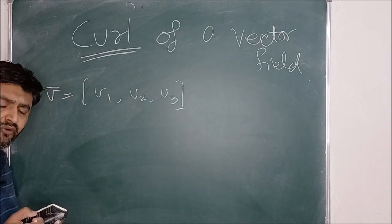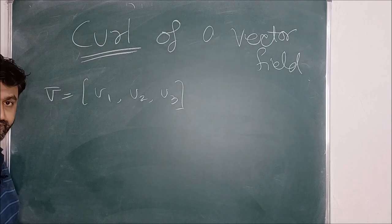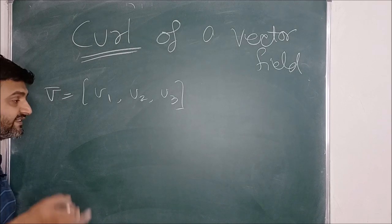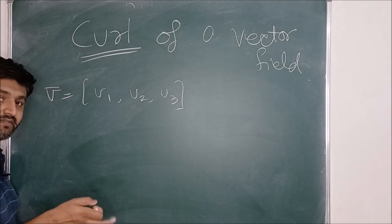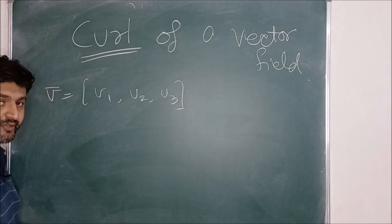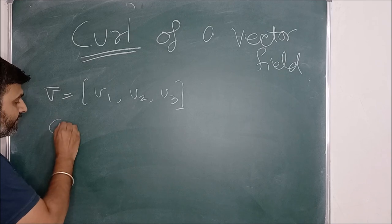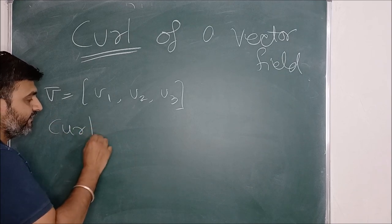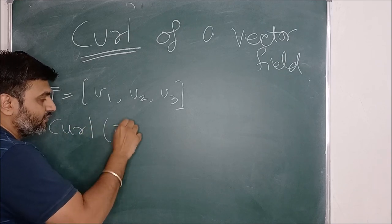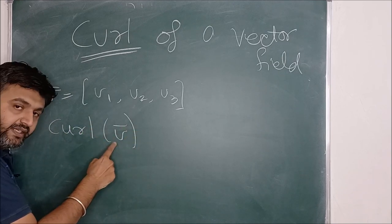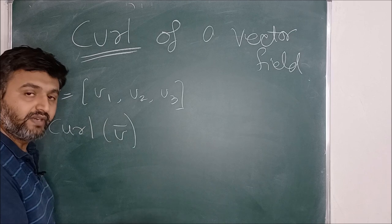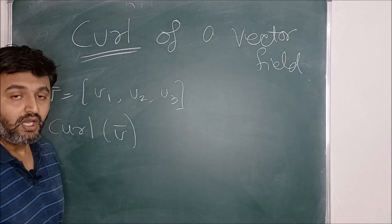The question is how do you find it? That's where the mathematics comes into picture. So curl of a vector field — what will curl do? It will take a vector as input and give you a vector as output.